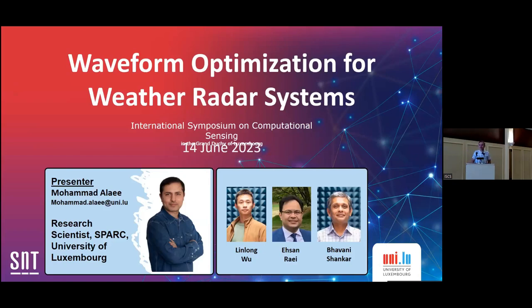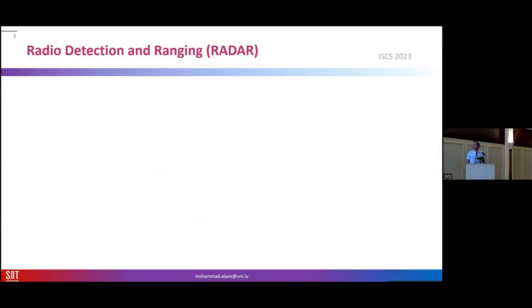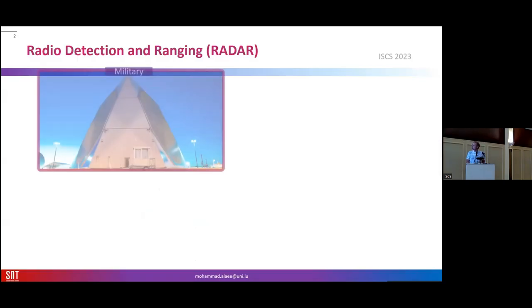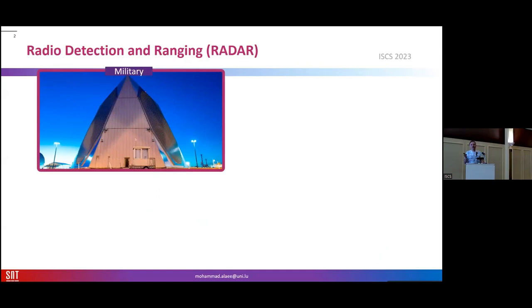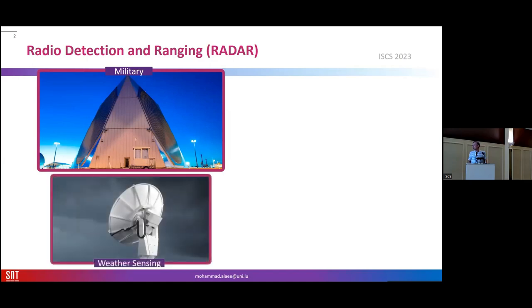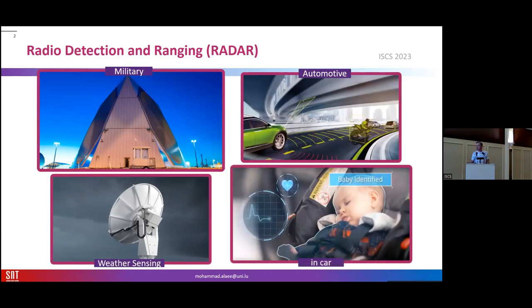Thank you very much. This is a talk about weather radar systems and other radars that can also do imaging. Starting from radar definition, we know that radar has different applications that we saw in military, weather sensing, automotive, and in-car, which will be the next area of focus.